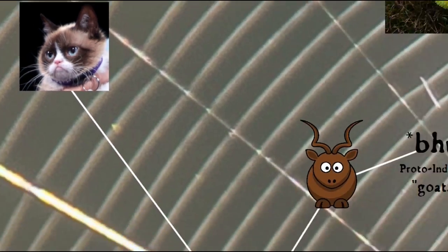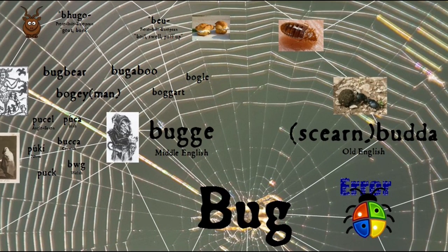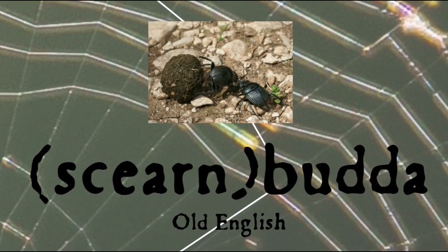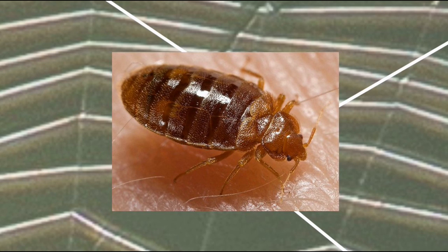And this less frightening sense may have something to do with another similar sounding word that seems to have merged with bug. Old English buddha meaning beetle, which is only attested in compound words such as sharnbuddha, meaning dung beetle, sounds enough like bug that the two may have fallen together. And by the 17th century, the word bug starts to be used to refer to insects, initially bedbugs, and eventually any insect. One imagines that the fact that insects such as bedbugs are potentially frightening, or at least annoying, help these words merge as well.